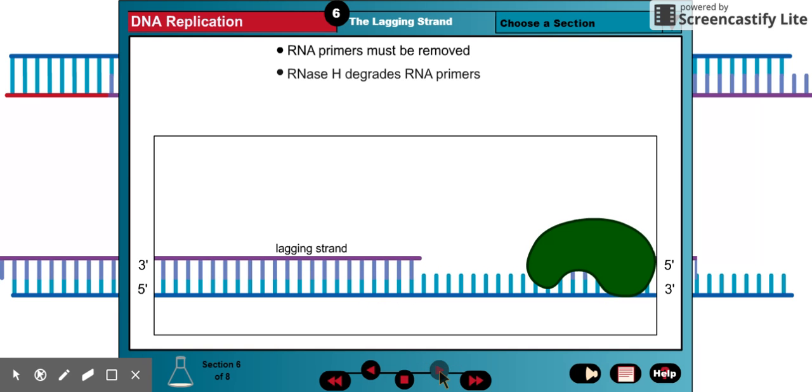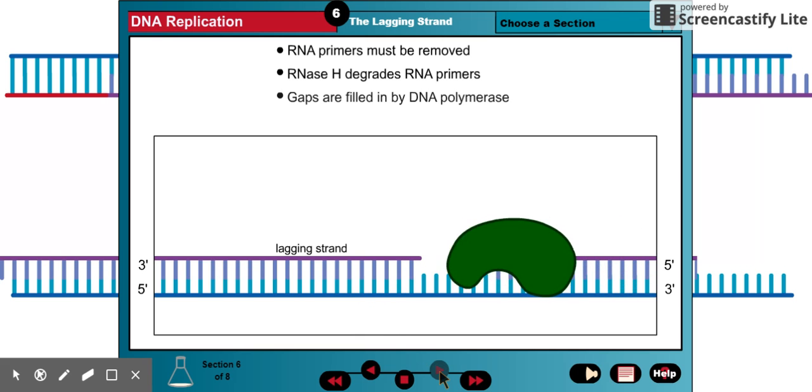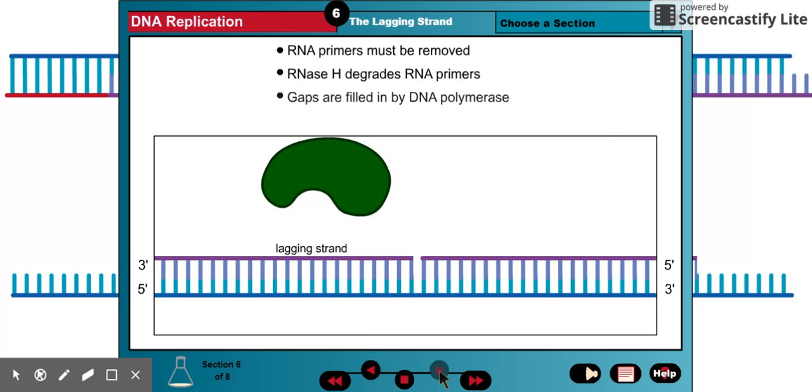Next, the sequence gap created by RNase H is then filled in by DNA polymerase, which extends the 3' end of the neighboring Okazaki fragment.